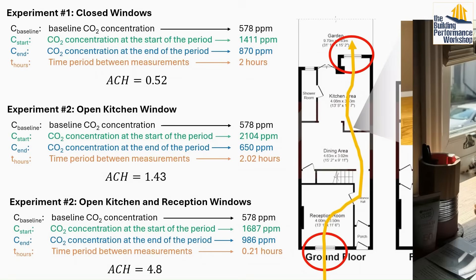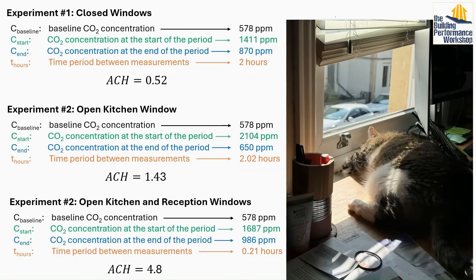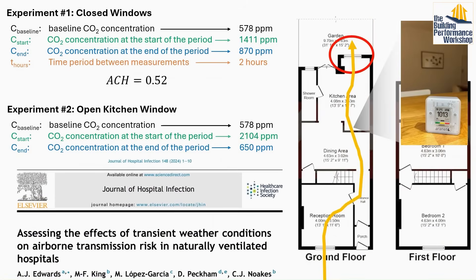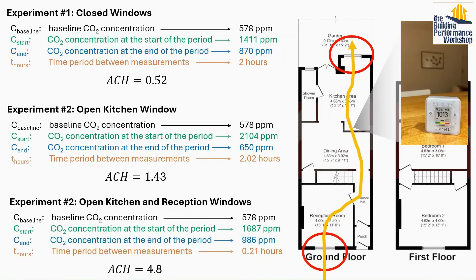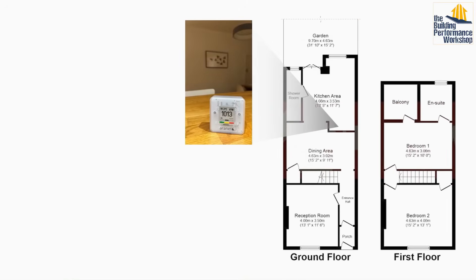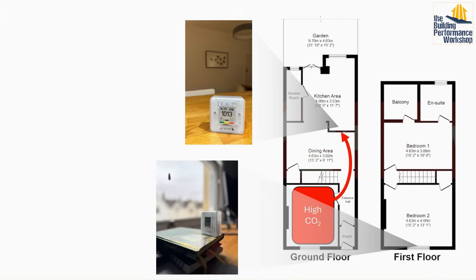Every house is different — the furnishings, obstructions, and how the wind hits each house will all affect the ventilation rate. To understand your home and what works best, you'll need to do experiments like these. When interpreting your data: repetition matters, so the more times you repeat a measurement, the more confidence you'll have. Also, the air exchange may not come solely from outside — if the next room has high CO2, that could affect your decay rate. Do this experiment throughout your home to build a full picture of how air flows.